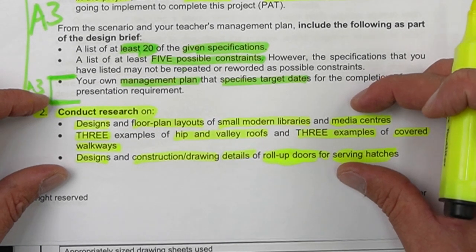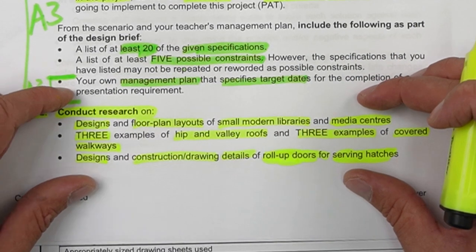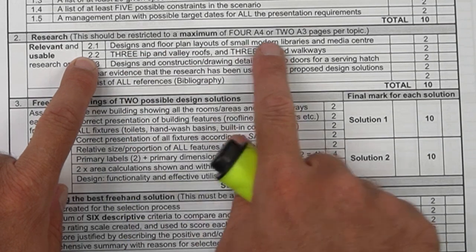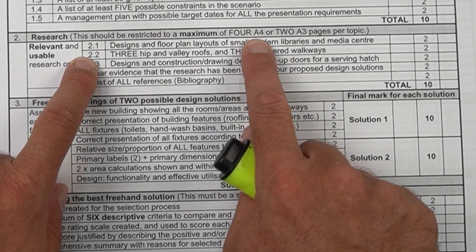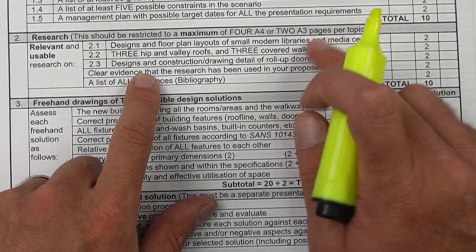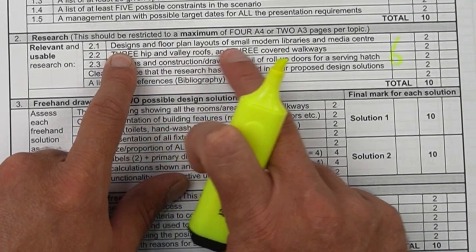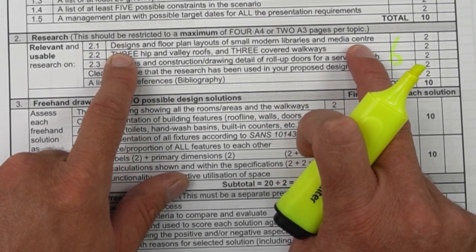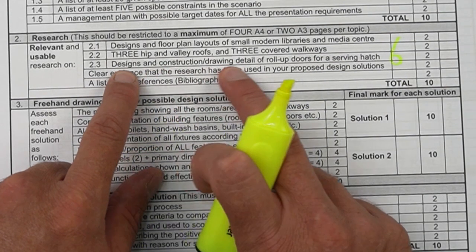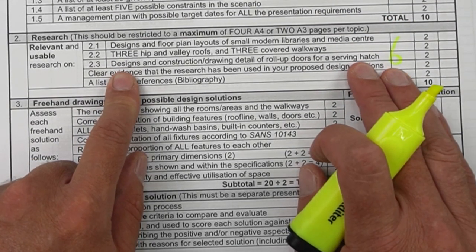You do not need to do research on swinging doors, stacking doors, windows, or anything else — only these three points, which is what you will be assessed on. The checklist confirms this. They specify that research should be restricted to a maximum of four A4 or two A3 pages per topic, giving a total of about six pages. Library layouts, media center layouts, hip and valley roofs, covered walkways, and roll-up doors — that's five to six pages at most.